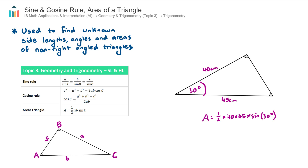That was a quick overview of using the sine and cosine rule and area of a triangle to find missing side lengths, angles, and areas of non-right-angle triangles. I recommend now practicing some of these IB exam questions over in the question bank.